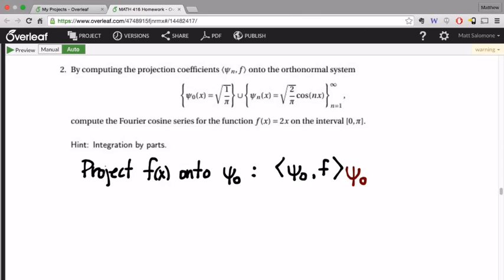So, in order to project f of x onto the function psi 0, what we need is to take the inner product of f with psi 0, and then multiply it by psi 0. In principle, when we project onto a function, we also have this denominator. So what happens with that denominator in this problem?